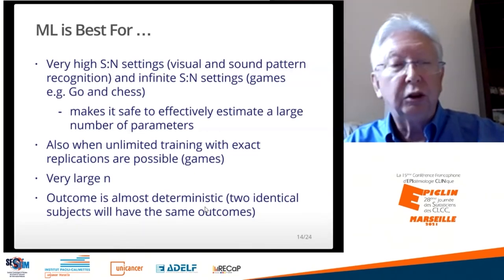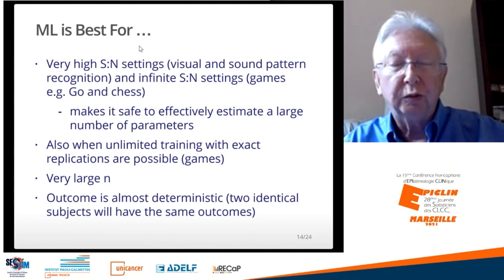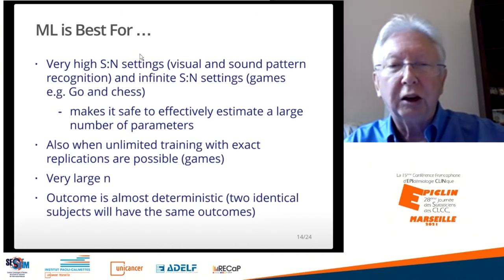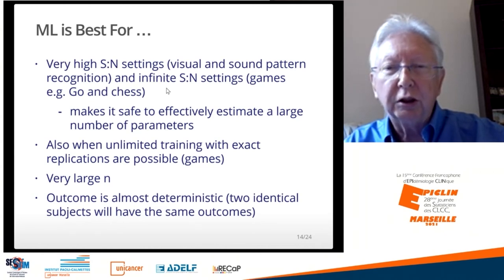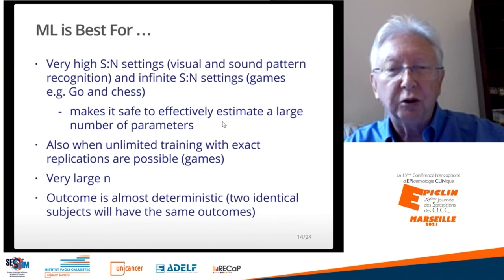When is machine learning most applicable? It's most applicable when you have a signal-to-noise ratio that's very high — for example, when residual variance is low and true R-squared is high. In visual and sound pattern recognition, the signal-to-noise ratio is very high. When the signal-to-noise ratio is essentially infinite — such as playing games like Go or chess — there is no noise; the rules cannot be broken and the winner is assessed with 100% accuracy. You can safely estimate a large number of parameters when you have a high signal-to-noise ratio.